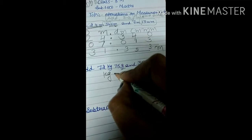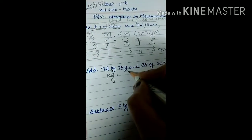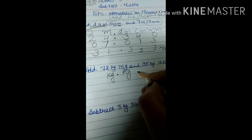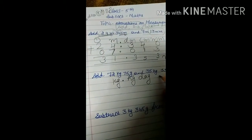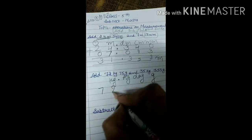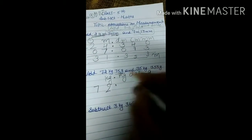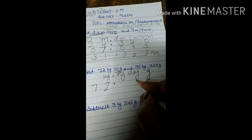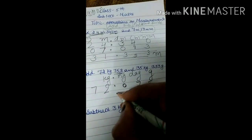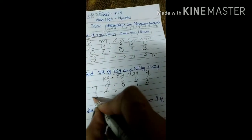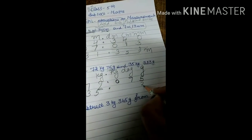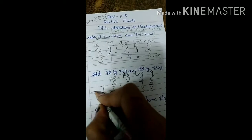After kilogram, put the decimal point. Then write the units: hectagram, decagram, and then gram. So write 72 kg, put the point, then 75 grams — finish at the gram place. Then 35 kg, then 333 grams — finish at the gram place. Where units are missing, put a zero.